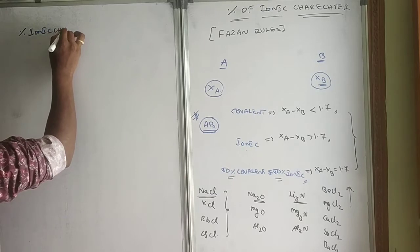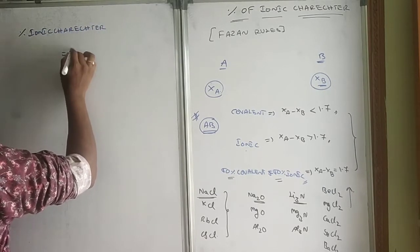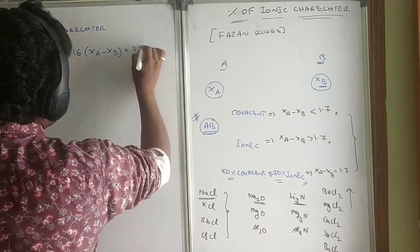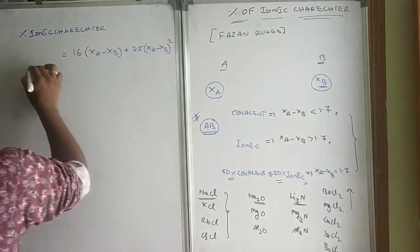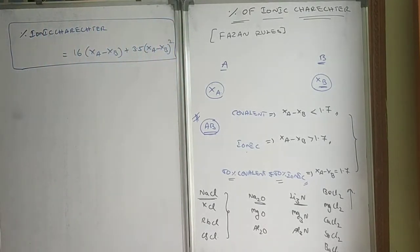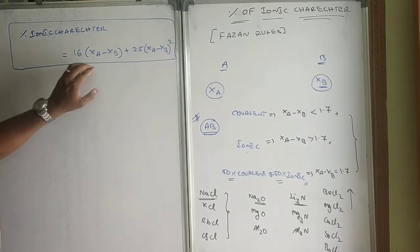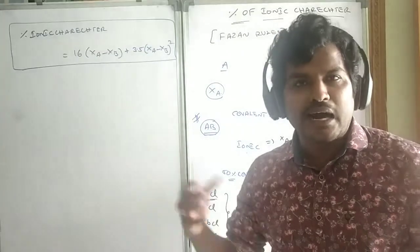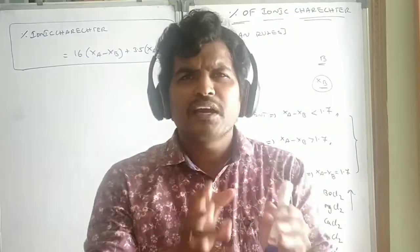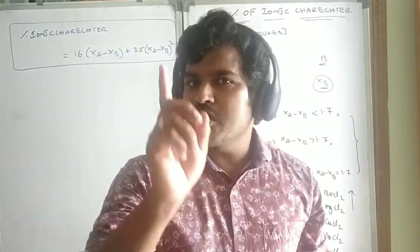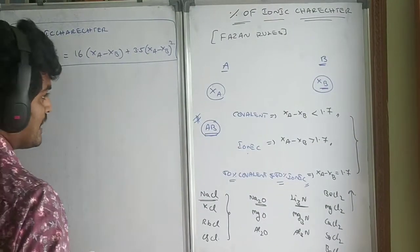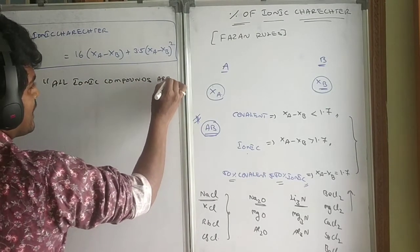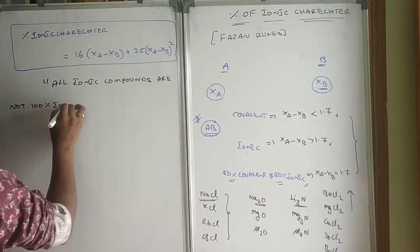The percentage of ionic character is equal to 16 times (XA minus XB) plus 3.5 times (XA minus XB) squared. This equation is given by Alred, the scientist who formulated it. Why do we need to find the percentage of ionic character? Because all ionic compounds are not 100% ionic in nature — underline this statement: all ionic compounds are not 100% ionic in nature.